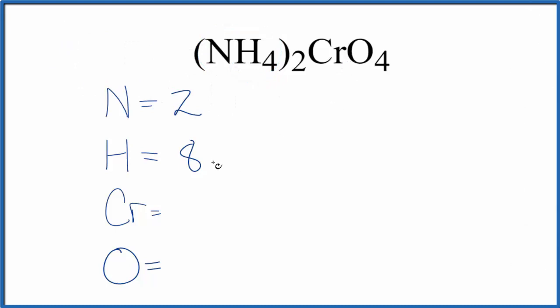For the chromate, we have 1 chromium atom, even though it's not written. And we have 4 oxygen atoms. If we add all of these up, 2 plus 8 is 10, plus 1 plus 4 is 5, so 10 plus 5 equals 15 total atoms in (NH₄)₂CrO₄.